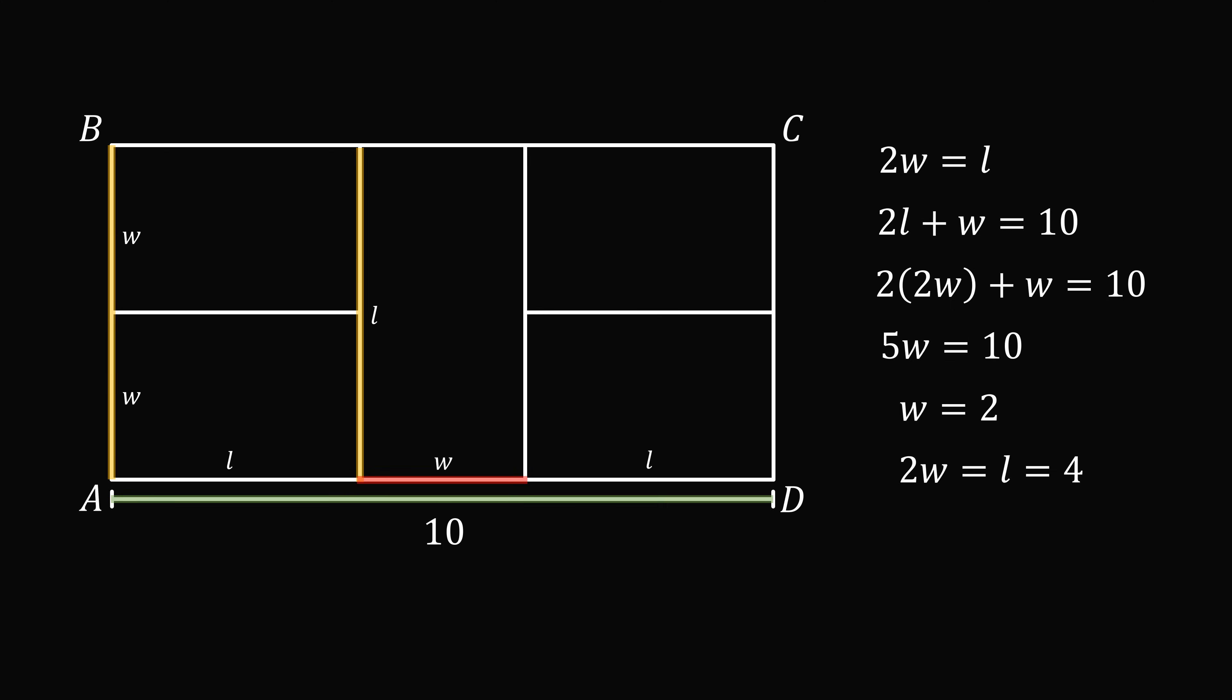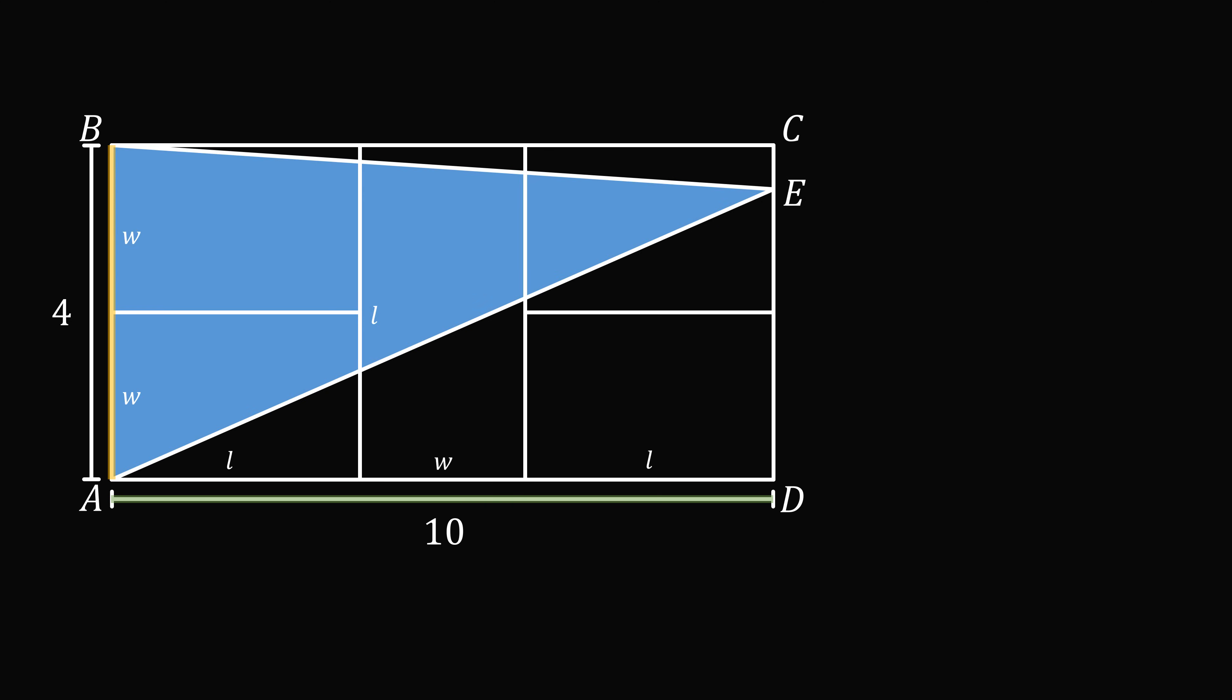Then, 2W is equal to L is equal to 4. So we're almost ready to solve the problem. The length of AB is equal to 4, so now what's the area of the triangle ABE?